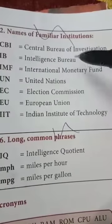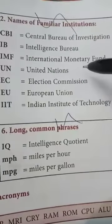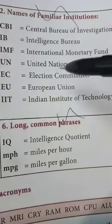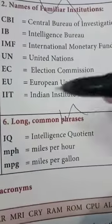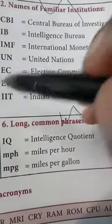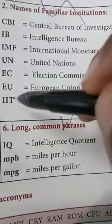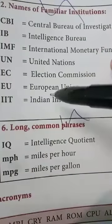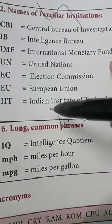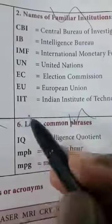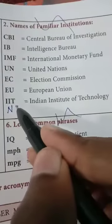IB stands for Intelligence Bureau. IMF stands for International Monetary Fund. UN stands for United Nations. EC stands for Election Commission. PC means Personal Computer. EU stands for European Union. IIT stands for Indian Institute of Technology and NIT stands for National Institute of Technology.